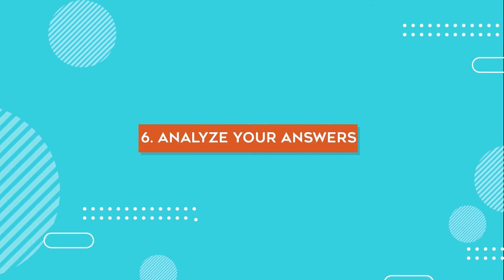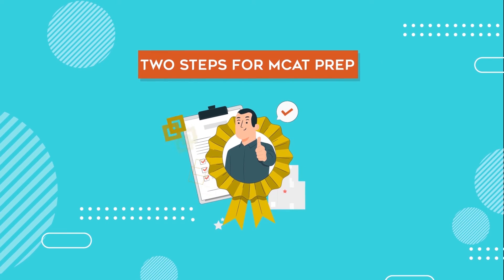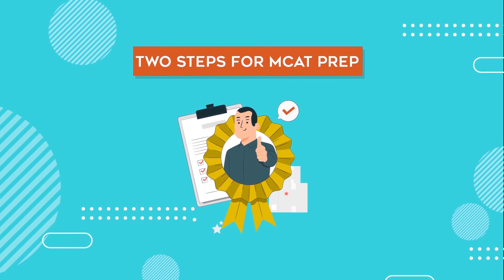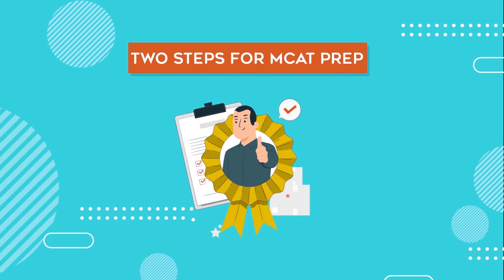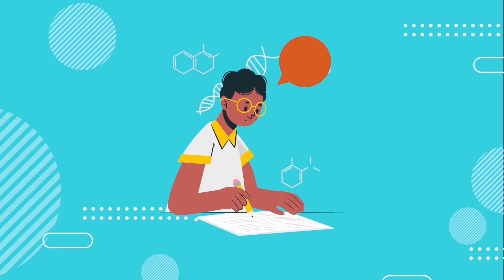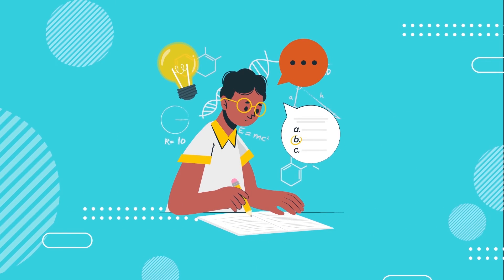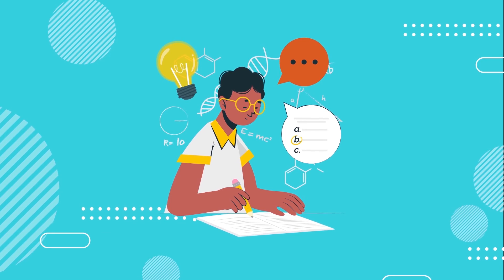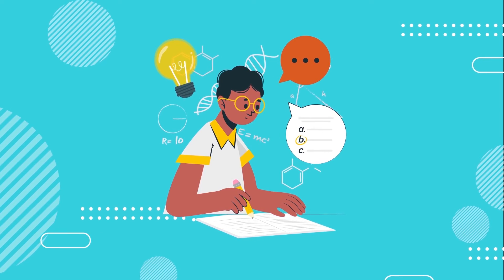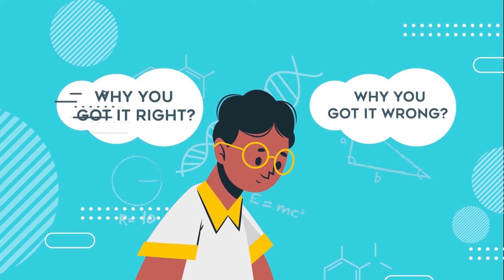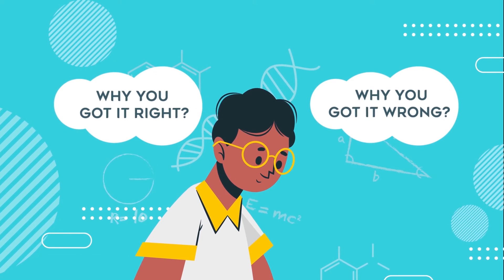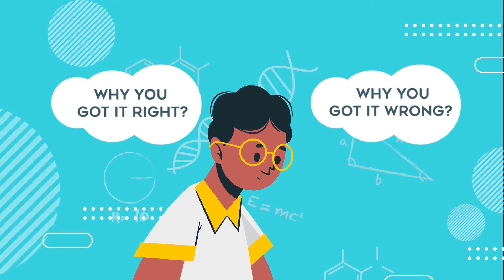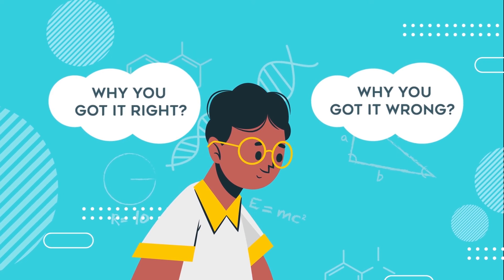Number six, analyze your answers. To add value to your MCAT prep, think of practice tests as requiring two steps before completion. One is actually writing the test, and the second one is going through your answers to find out the why behind all of your answers. Why you got the question wrong, but also why you got the question right. This is essential to help you determine areas you're succeeding in and areas that are weaknesses.